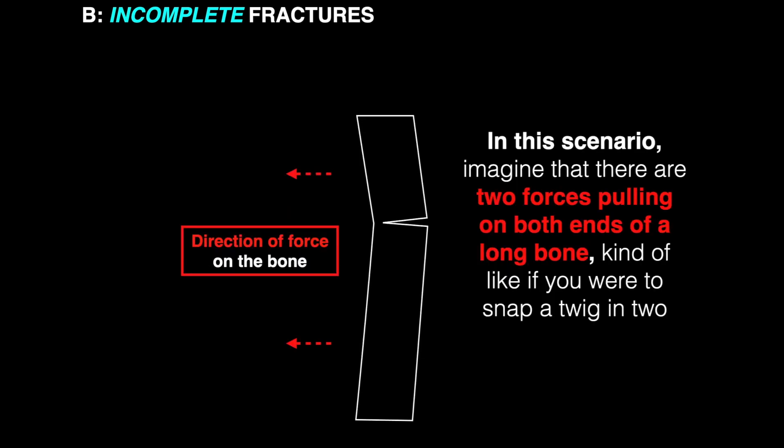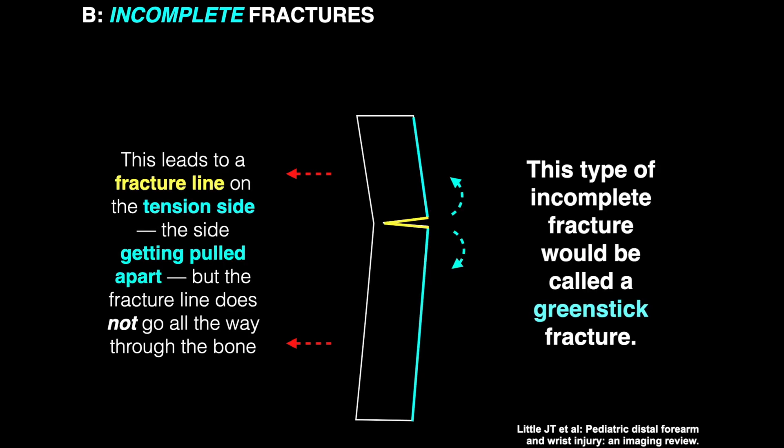So we've talked about bowing fractures and buckle fractures. We're now going to talk about a third type of incomplete fracture. In this scenario, imagine that there's two forces pulling on both ends of a long bone, kind of as if you were snapping a twig in two. This leads to a fracture line on the tension side, the side getting pulled apart, but the fracture line does not go all the way through the bone. This type of incomplete fracture would be called a greenstick fracture.